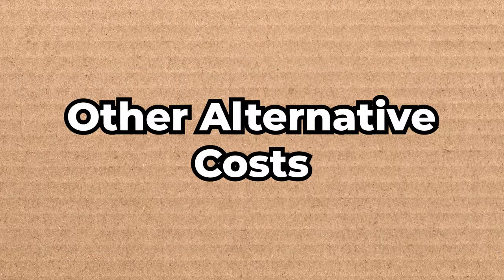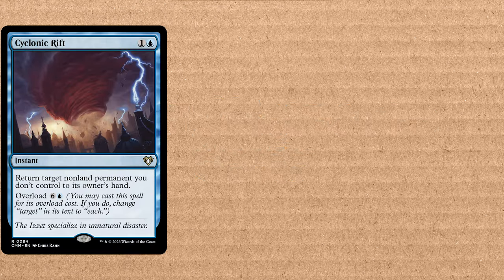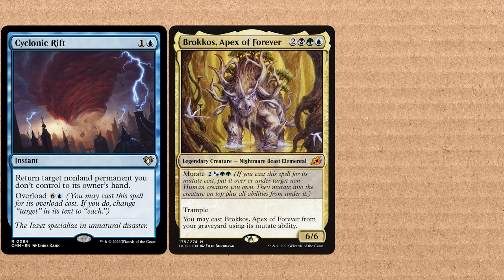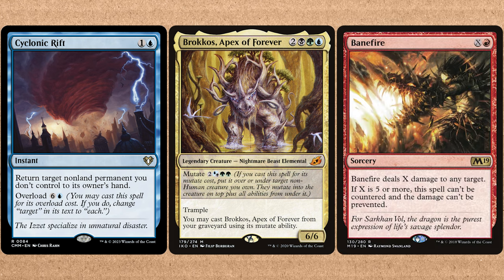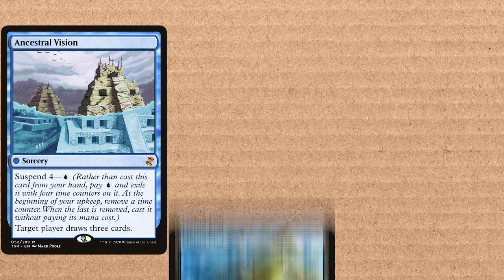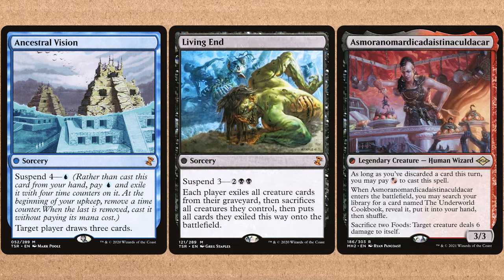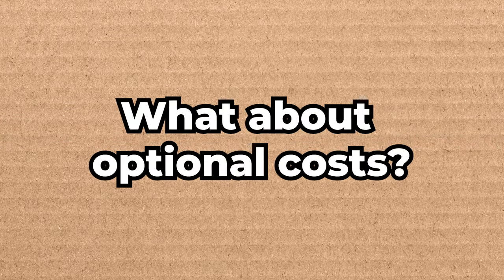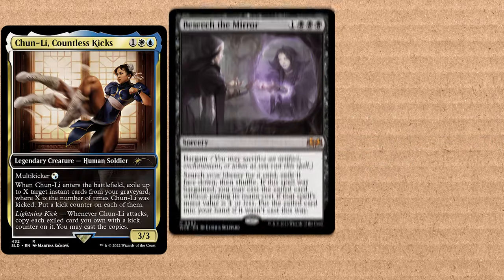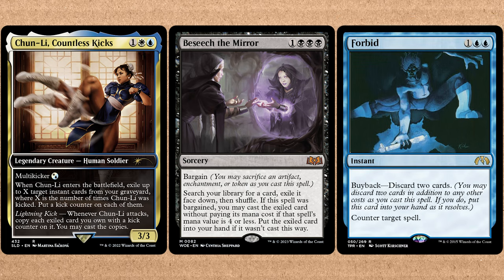Some other important things to note when casting spells for free: alternative costs like Overload or Mutate cannot be paid. X spells that get cast for free will always have an X value of zero. And you can cast spells with no mana value like Ancestral Vision, Living End, or As Foretold. Finally, optional additional costs like Kicker, Bargain, or Buyback may be paid as you're casting the free spell.